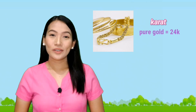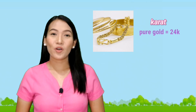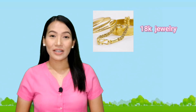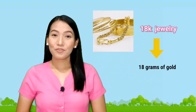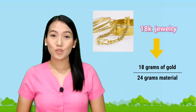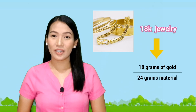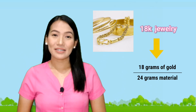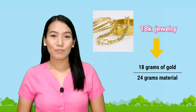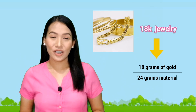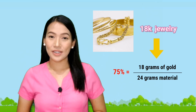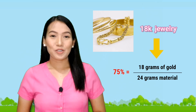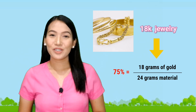The concentration of solid solutions like gold jewelry is expressed as carat. Pure gold is referred to as 24 carats. Jewelry that is said to be 18 carats contains 18 grams of gold for every 24 grams of the material. The remaining 6 grams consist of other metals like copper and silver. This material has a concentration of 75 percent gold — that is 18 grams divided by 24 grams times 100.